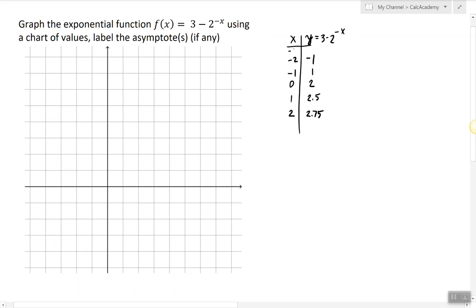We can try one more point, let's say negative 3. 2 raised to the negative negative 3 is 8, 3 minus 8 is negative 5.